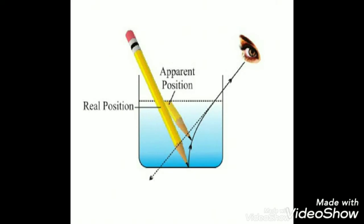Look at the shape of the fish in a beaker. The real position of a fish is different from the apparent position. The fish looks bent in the beaker. It is because light rays from the fish are refracted when they travel from water to air.